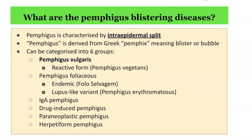What are the Pemphigus blistering diseases? Pemphigus is characterized by intraepidermal split — that is, a blister that forms in the upper layer of the skin. Pemphigus is derived from the Greek word pemphix, which means blister or bubble. It can be categorized into six groups.